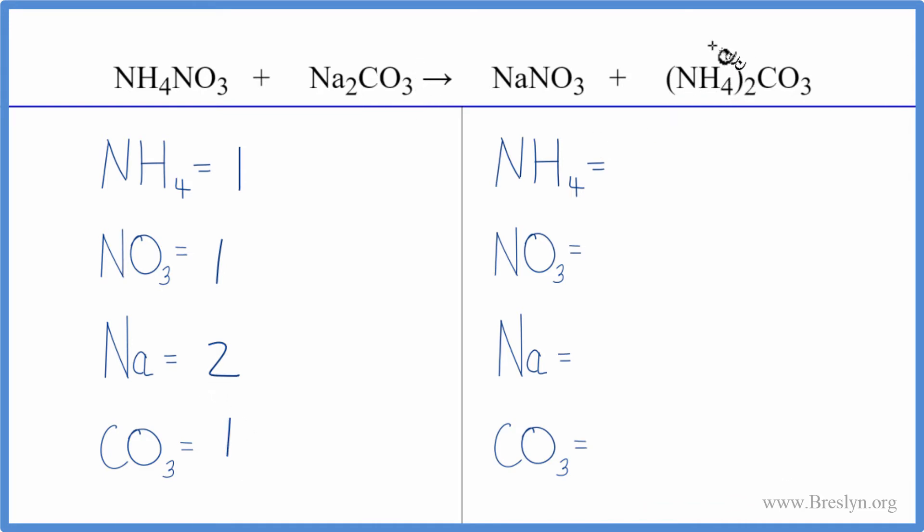On the product side we have one ammonium ion here times two, so we have two of those, one nitrate, one sodium, and then one carbonate. So it's all very neat, very compact the way we've done it here.